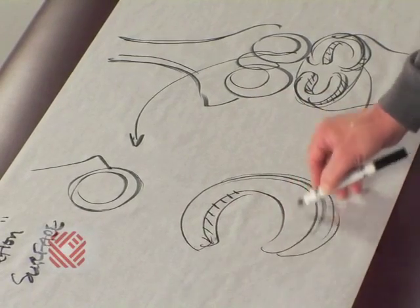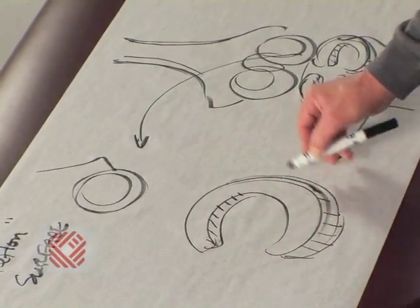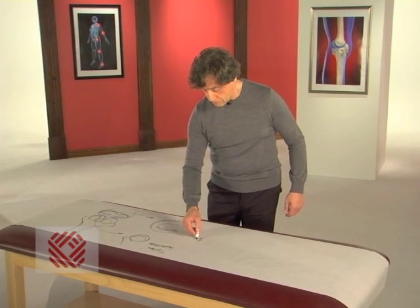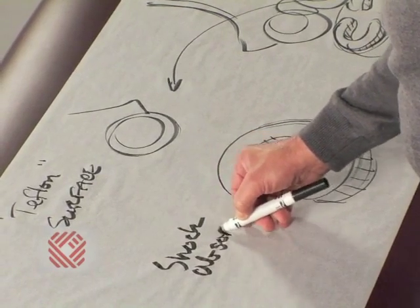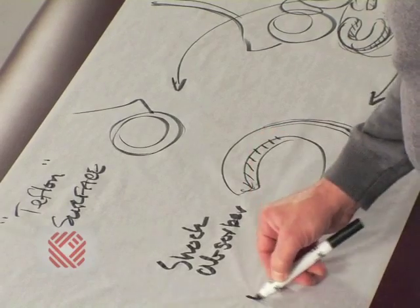It's thick in the back and it's thick in the front. This is the shock absorber, called the meniscus.